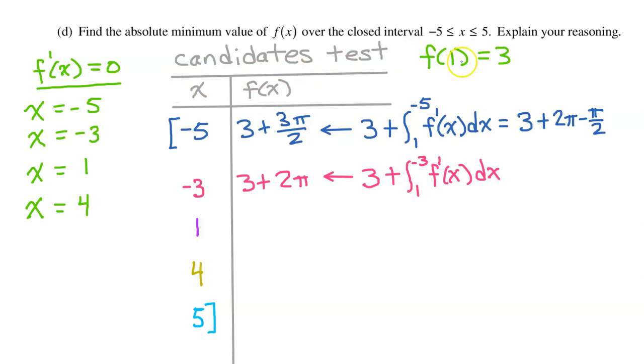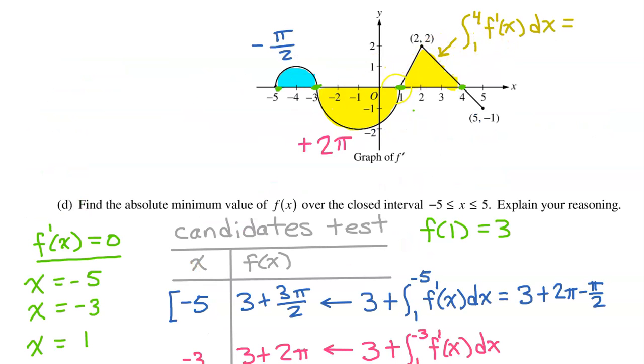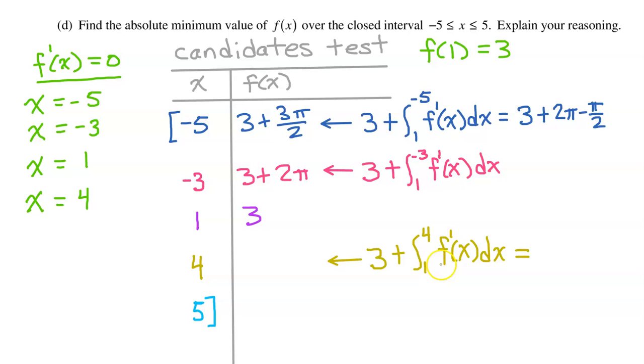We are given that f at 1 is 3. So no calculations required for this one. f at 4 should equal the initial value of 3 plus the integral of f prime from 1 to 4. The integral of f prime from 1 to 4 is just the area of this triangle. So that's 1 half base times height. So that is equal to 3. And we are integrating from left to right. So an area above the x-axis will be positive. Since the value of this integral turned out to be 3, now we have 3 plus 3. So f at 4 is 6.